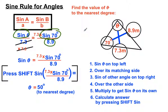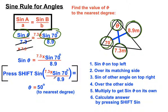It's worth checking whether that makes sense. We had a side of 8.9 metres relating to 70 degrees. Our theta is opposite the shorter side, 7.3, so we'd expect theta to be less than 70 degrees. Sure enough, 50 degrees makes a fair bit of sense. It's always worth checking your answer against the diagram in case something went wrong in the calculations.